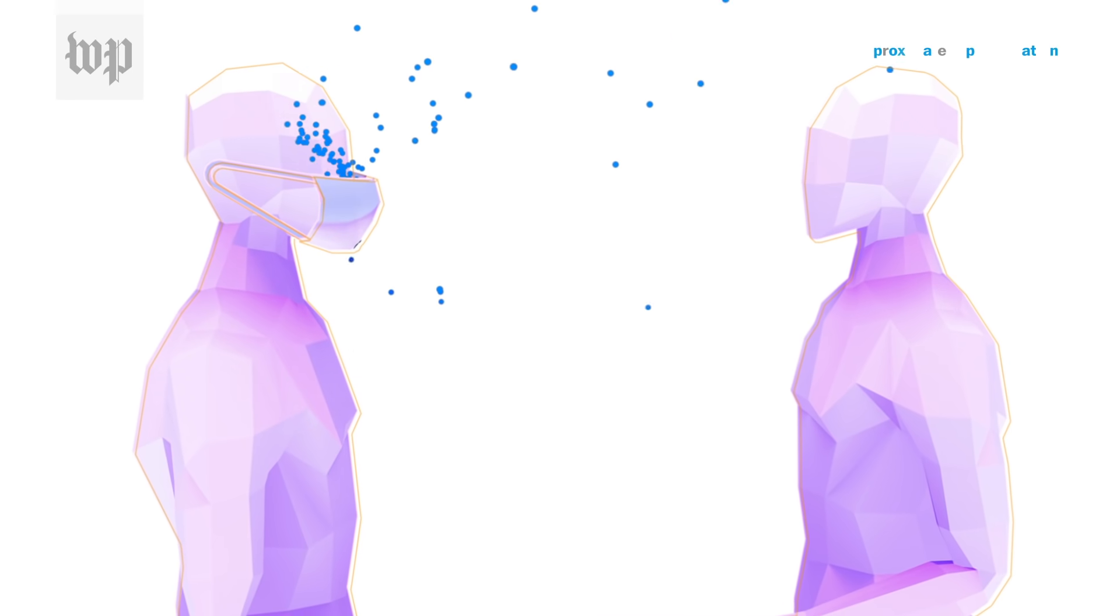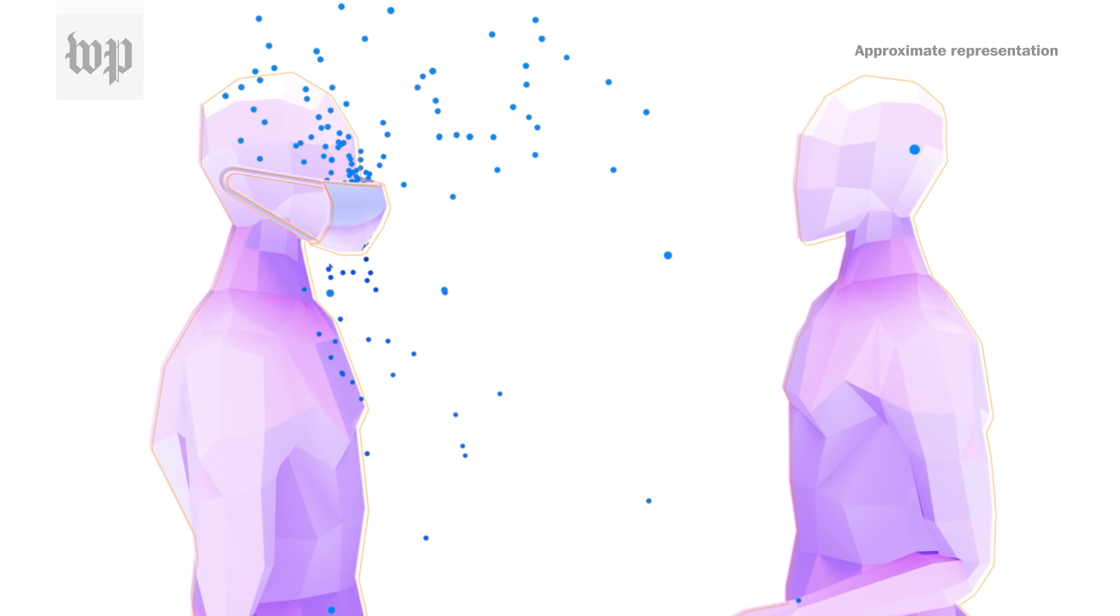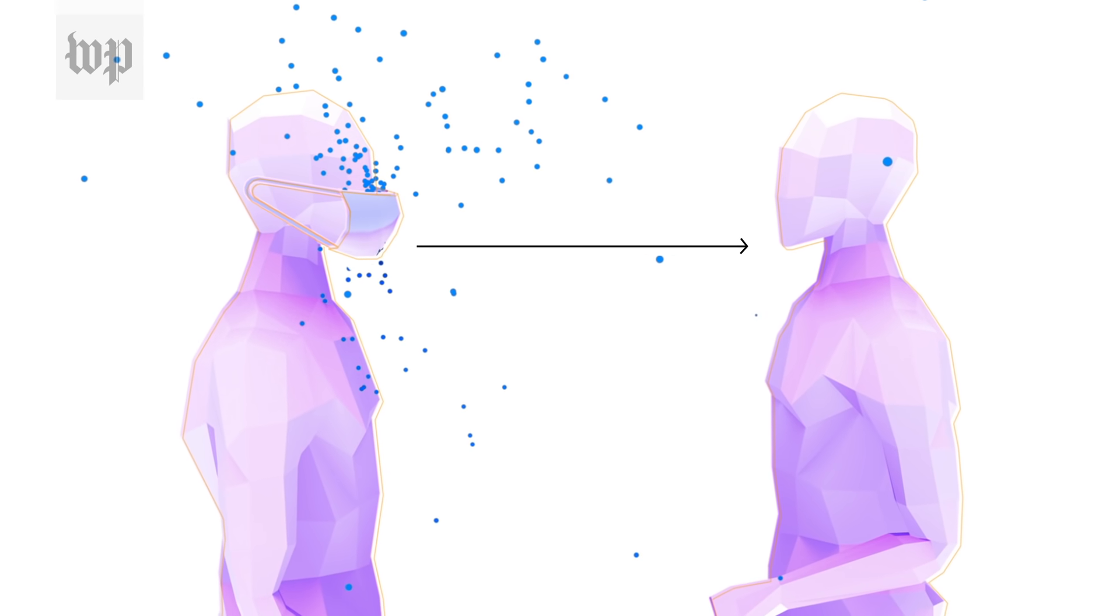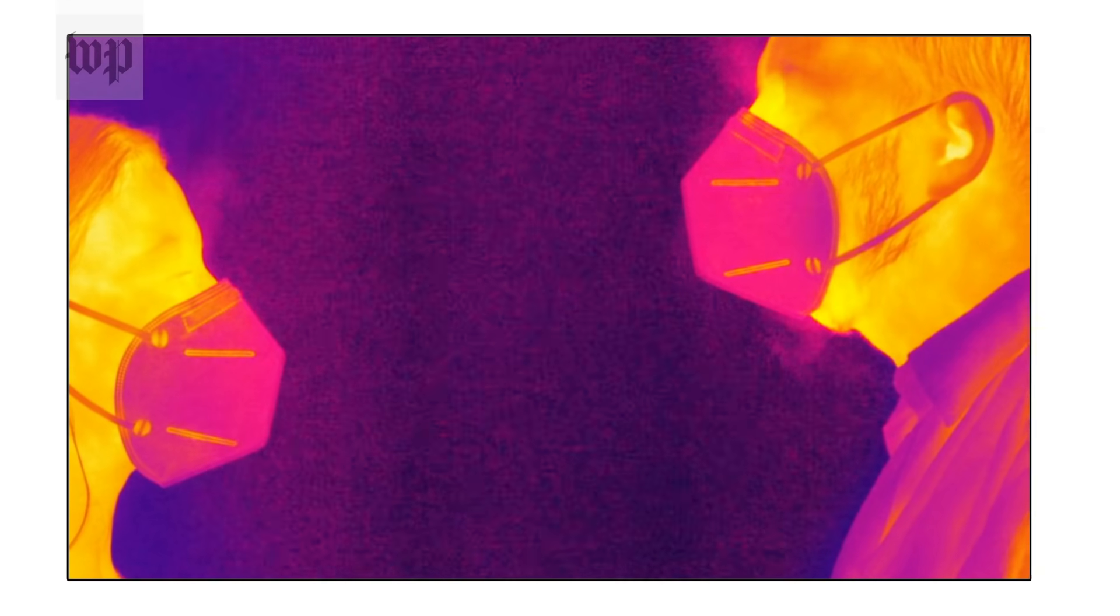So let's say you have 100 droplets coming out from the mouth. By the time they get past the mask, maybe there's only 18, maybe there's only 50, depending on what quality of a face mask you're wearing. But either way, it's going to reduce to some degree the number of droplets coming out.